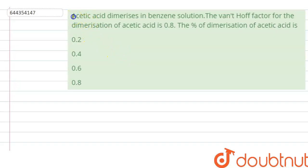The question says that acetic acid dimerizes in benzene solution. The van't Hoff factor for the dimerization of acetic acid is 0.8. The percentage of dimerization of acetic acid is: option A 0.2, option B 0.4, option C 0.6, and option D 0.8. So we have to calculate the percentage of dimerization of acetic acid, basically the degree of association.